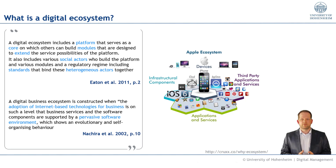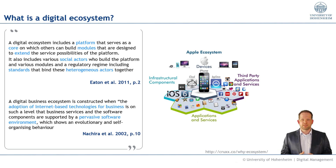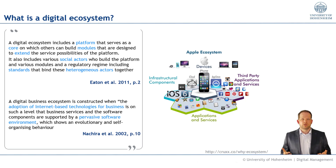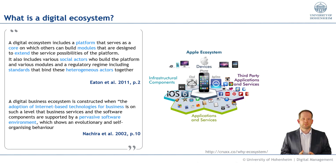Let's move on with the next definition. A digital business ecosystem — now adding the word 'business' — is constructed when the adoption of internet-based technologies for business is on such a level that business services and software components are supported by a pervasive software environment that shows evolutionary and self-organizing behavior. This goes far beyond the simple example of a digital ecosystem with a platform — it's broader in a business sense.